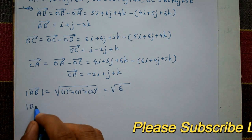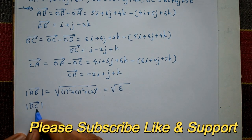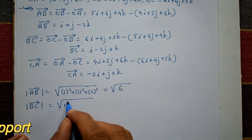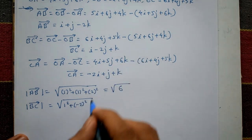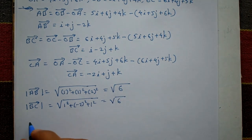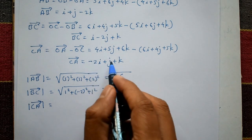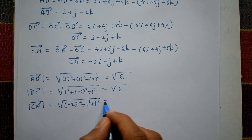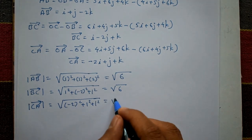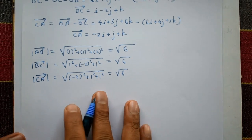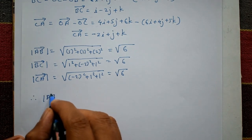The magnitude of BC: the coefficients are i = 1, j = -2, k = 1, so it is √(1² + (-2)² + 1²) = √(1 + 4 + 1) = √6. The magnitude of CA: the coefficients are -2, 1, 1, so it is √((-2)² + 1² + 1²) = √(4 + 1 + 1) = √6. All three magnitudes equal √6.